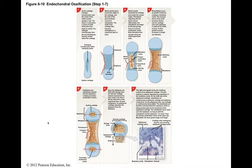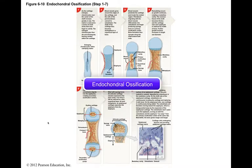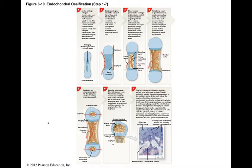During development, most bones originate as hyaline cartilages that are miniature models of the corresponding bones of the adult skeleton. These cartilage models are gradually replaced by bone through the process of endochondral ossification. We'll look at the steps in a limb bone development.